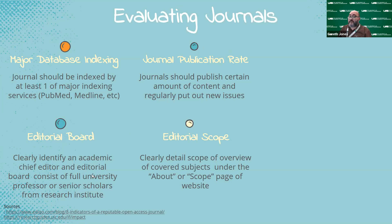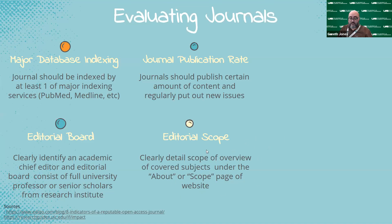The editorial board should consist of full university professors or senior scholars from a research institute. There are undergraduate research journals — we have one here at UAB called Inquiro — but when you're getting to the next level, you really want to make sure it has these identifiers. You want to make sure the scope of subjects is clearly detailed on the About or Scope page of the website, that it's not vague or too broad, and that it's connected specifically to what you're submitting.